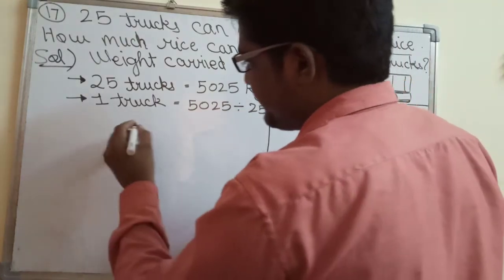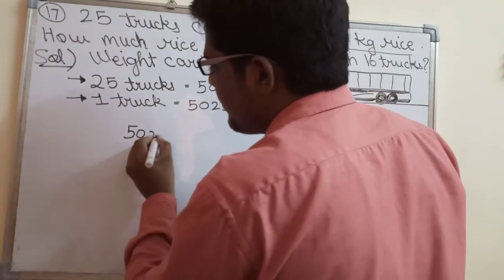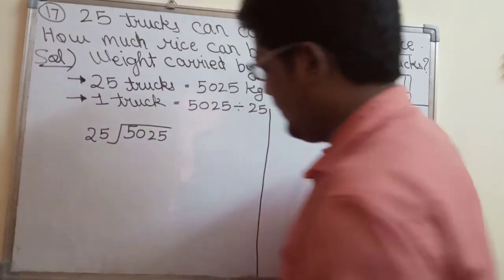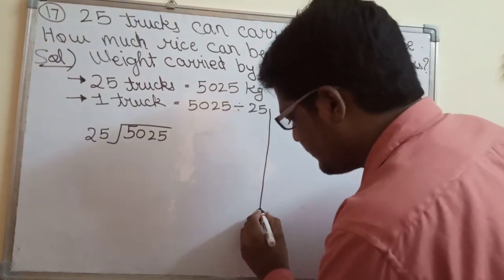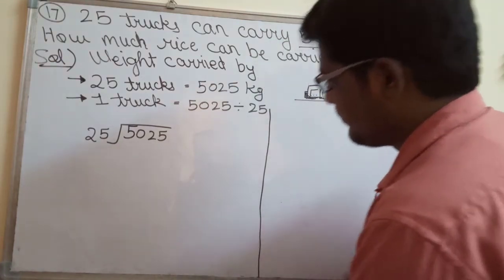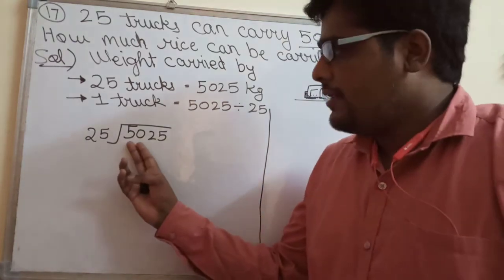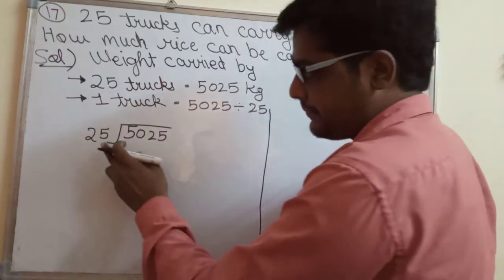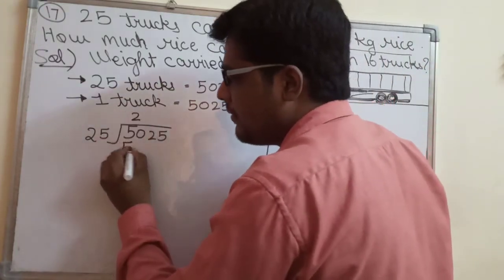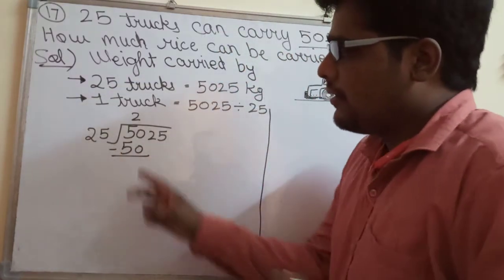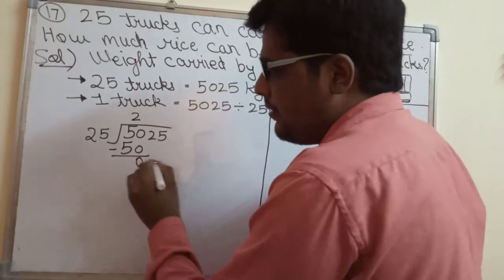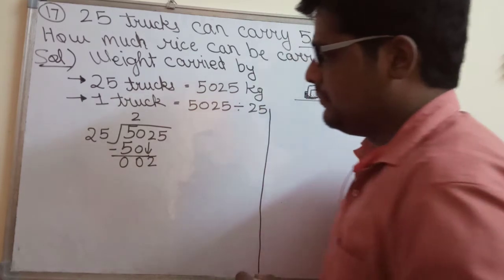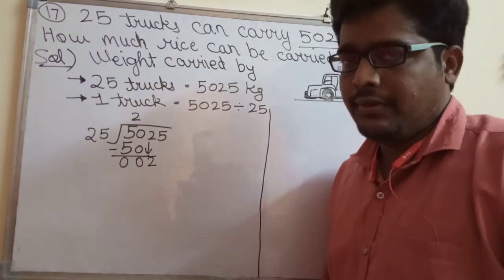We will divide 5025 by 25 like this. First, take two digits — we get 50. Now 25 twos are 50. Subtract: 0 from 0 gives 0, and 5 minus 5 gives 0. Now bring the next number 2 down.